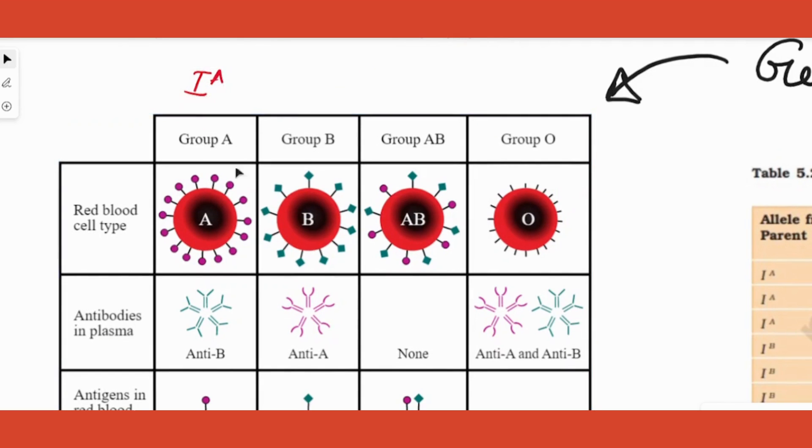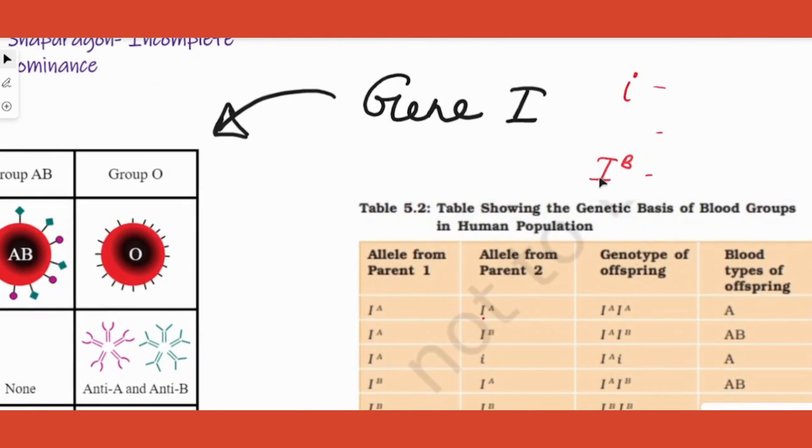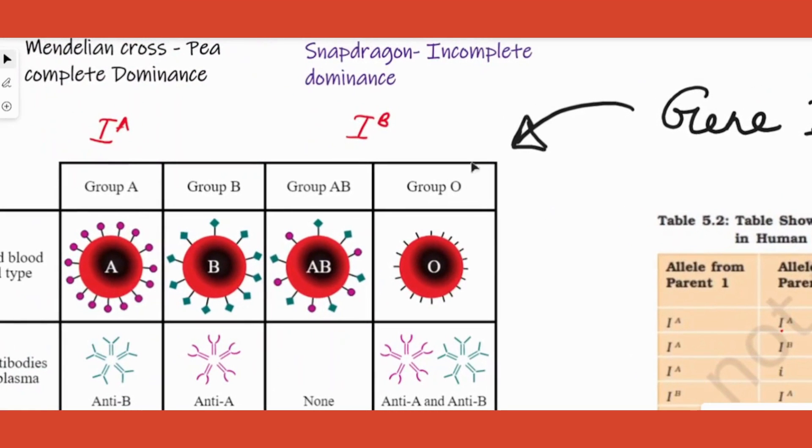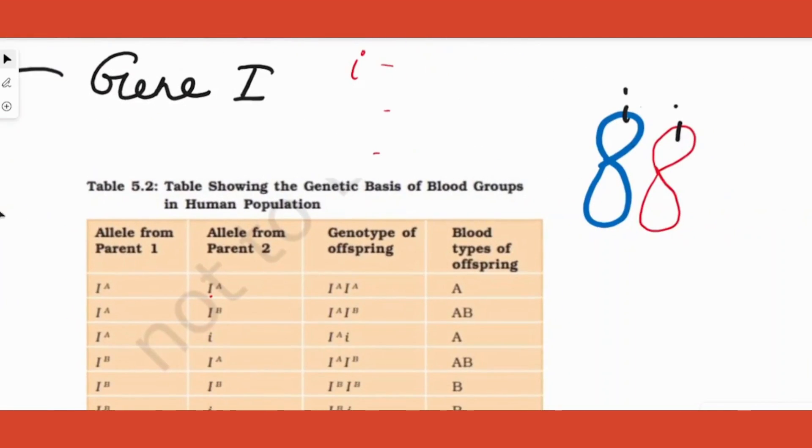On the other hand, if the allele is IB, we call that IB, and the surface antigen is B and my blood group is B, and so on. I hope you can understand that.